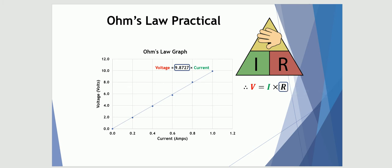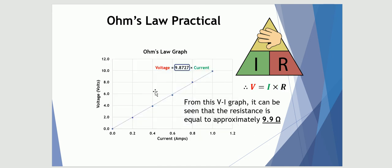So effectively, by finding the gradient of a voltage-current graph we've determined the resistance of this unknown circuit. To conclude: from this voltage-current graph it can be seen that the resistance of the unknown resistor is approximately 9.9 ohms. I hope this has shown you how to use Excel and a line of best fit to determine the resistance of an unknown resistor via Ohm's Law. Thanks for watching — keep working hard and study your physics.